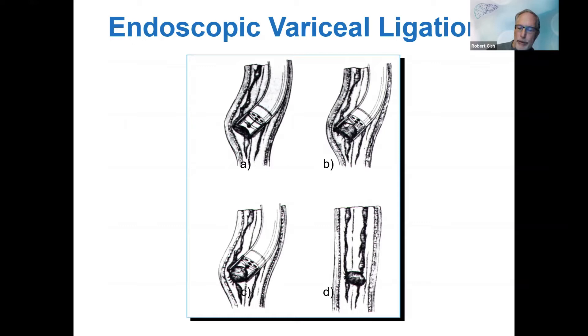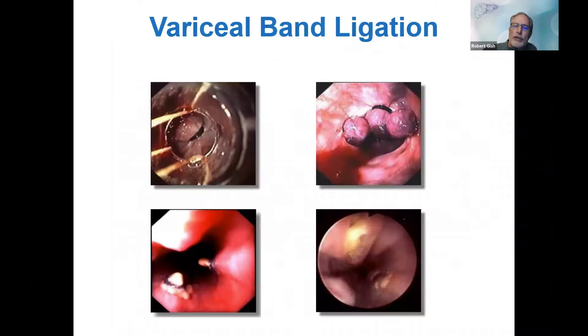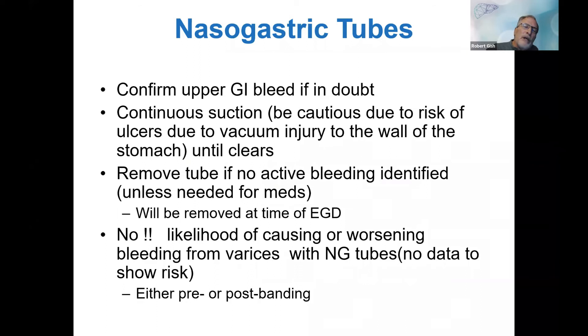I do prefer nadolol. There are contraindications such as heart failure, massive ascites, asthma, or diabetes — I'll be very cautious about beta blocker use. I'm very aggressive about banding and very conservative about beta blockers. That's what variceal ligation looks like — not relevant to your team, but useful for medical students or other staff. You all are experts at this, so I'll move quickly.